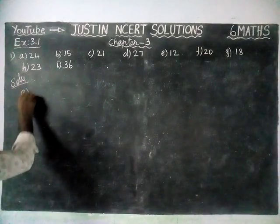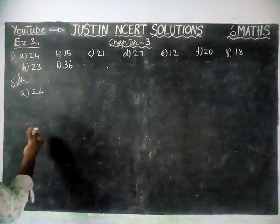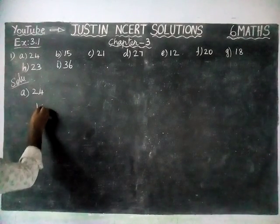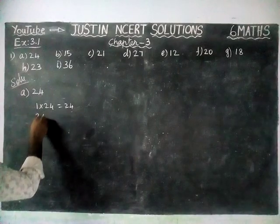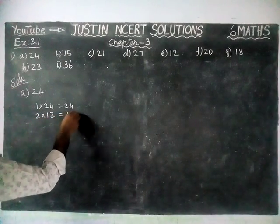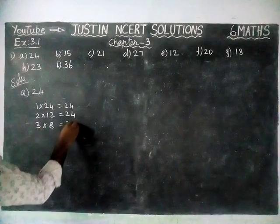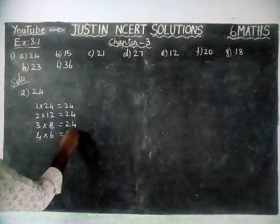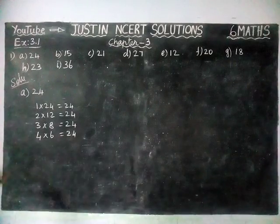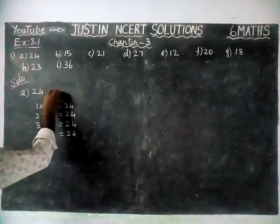First sum, option A: 24. Factors of 24 — we are going to find it by using the table. 1 into 24 is equal to 24. 2 twelves are 24. 3 eights are 24. 4 sixes are 24. Now by using this table, we are going to write all the factors.